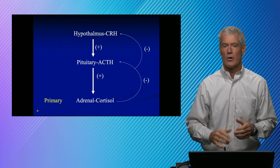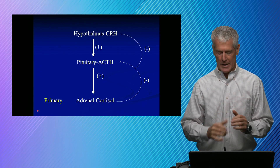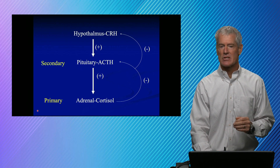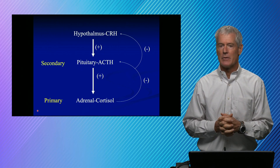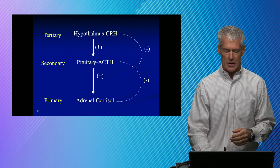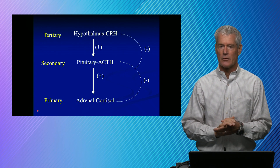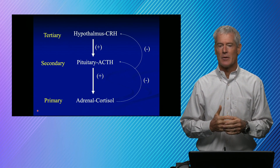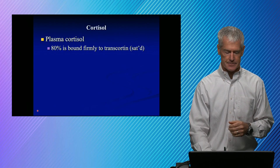A primary disorder is at the end organ — so that would be at the adrenal gland. A secondary disorder would be at the pituitary. And a tertiary disorder would be at the hypothalamus. We have specific tests that help us figure out whether it's primary, secondary, or tertiary.